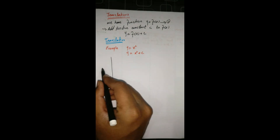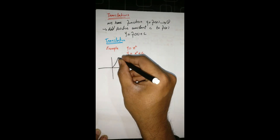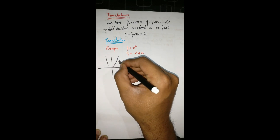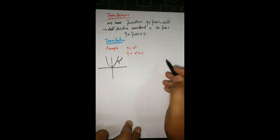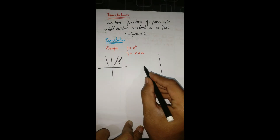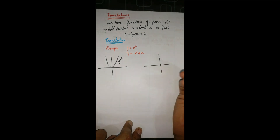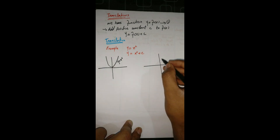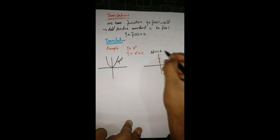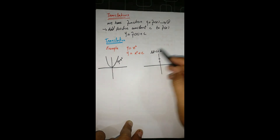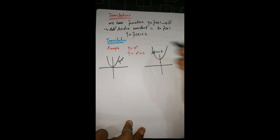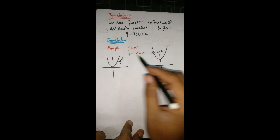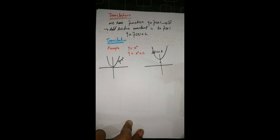That is the graph of y = x². Whenever we add a constant c to our function, the graph just translates up by c units. The value of c could be 1, 2, 3, and so on. Let's suppose c = 2 — that means this parabola is translated up by 2 units.